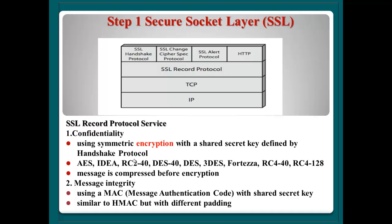Step one: Secure Socket Layer — SSL. SSL has two layers and four protocols: SSL record protocol, handshake protocol, change cipher spec protocol, and alert protocol. The SSL record protocol is located between TCP layer four and the application layer. The SSL record protocol supports two kinds of features: confidentiality and message integrity.